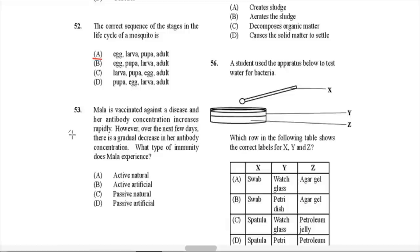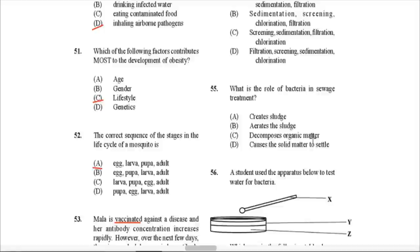Question 53: Mala is vaccinated against a disease and her antibody concentration increases rapidly, then gradually decreases over the next few days. What type of immunity does Mala experience? Key word: she was vaccinated, meaning she got the actual pathogen (dead or weakened) inserted into her blood to help her produce antibodies. This would be an example of active artificial immunity — also called artificially actively acquired immunity. So that is B.